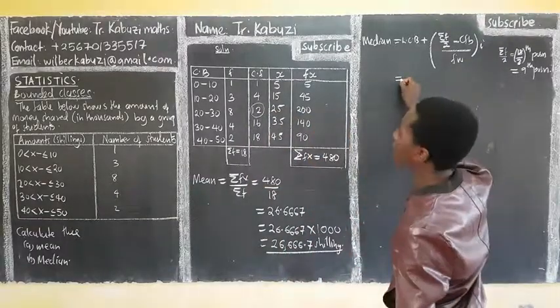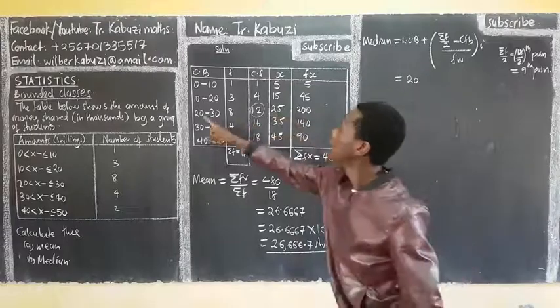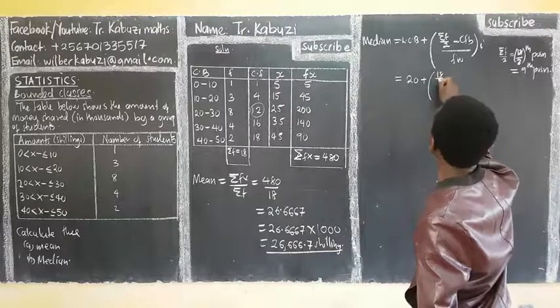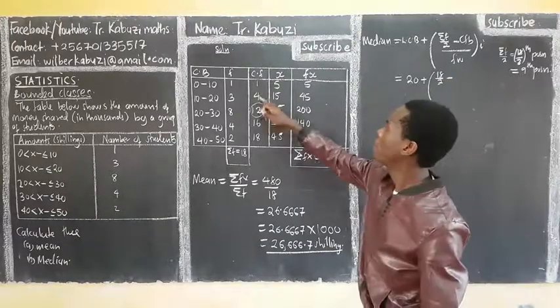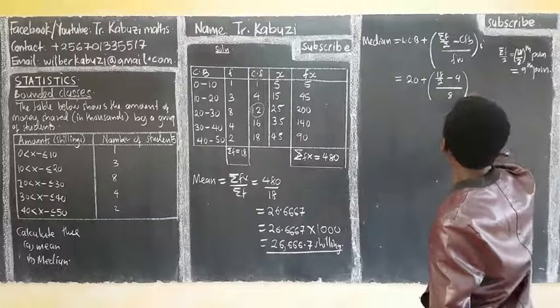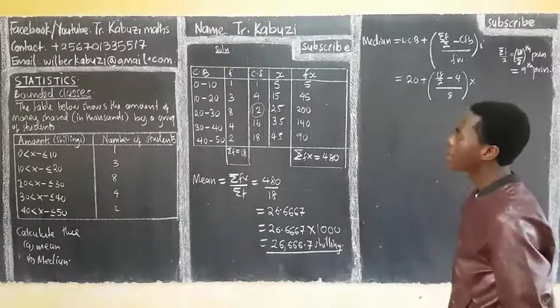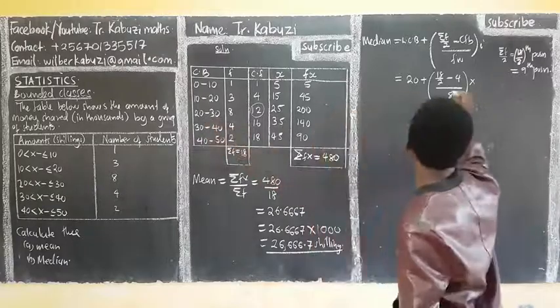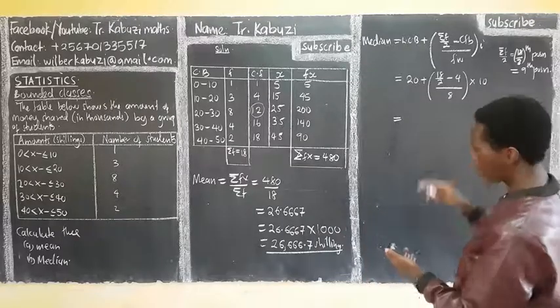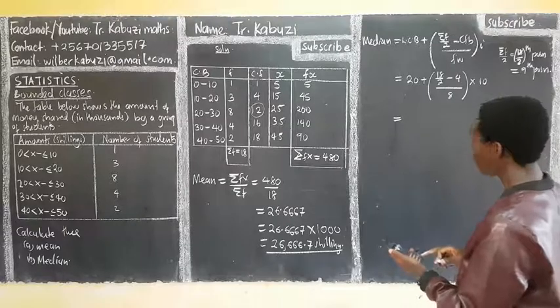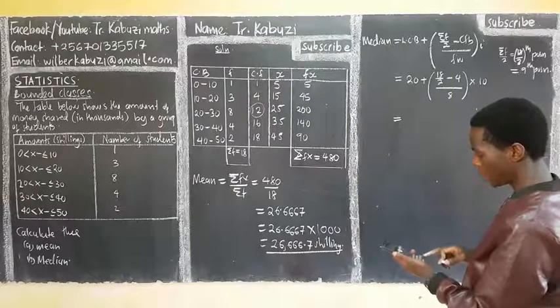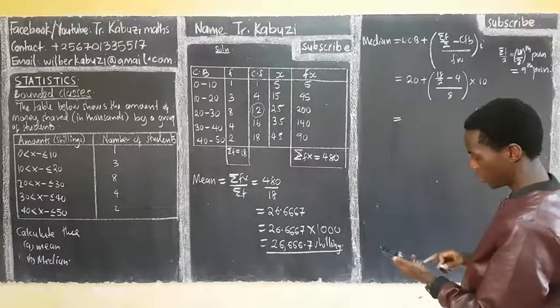You take where you have the nine position. You see that here I am going to be taking the median class. So the median class is going to be our lower class boundary, which is twenty. Then plus, this is nine, just say eighteen over two minus cumulative frequency, which is four. All that over frequency, which is eight, then times our class width, which is ten. So you say nine minus four, divide by eight, times ten, plus twenty.